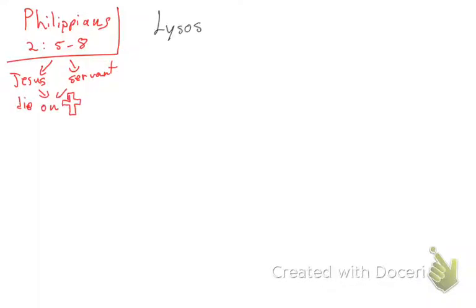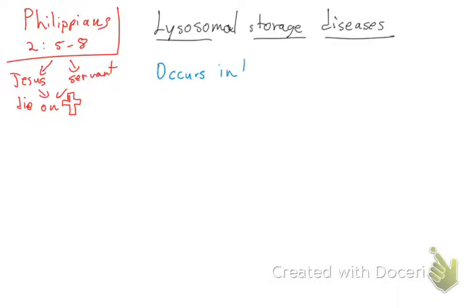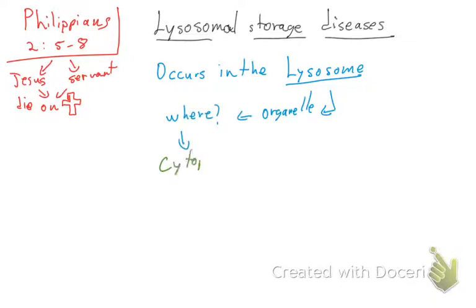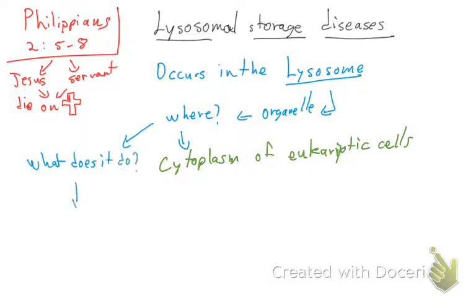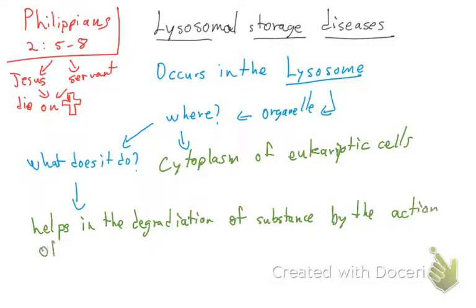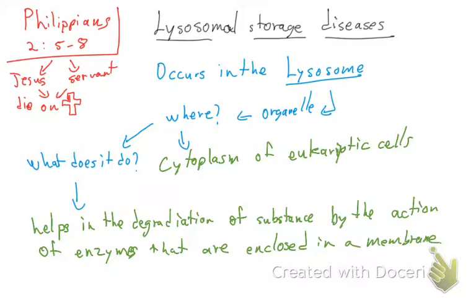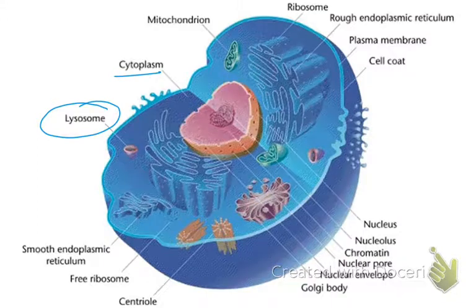So that was Jesus — he became a servant and was obedient to death on the cross. Now we're going to continue. Everything starts with the lysosomes. Lysosomes are organelles found in the cytoplasm of eukaryotic cells. They help in the degradation of substances by the action of enzymes that are enclosed in a membrane. Here is a picture of the cell showing the cytoplasm, and the lysosomes are shown as blue circles within it.